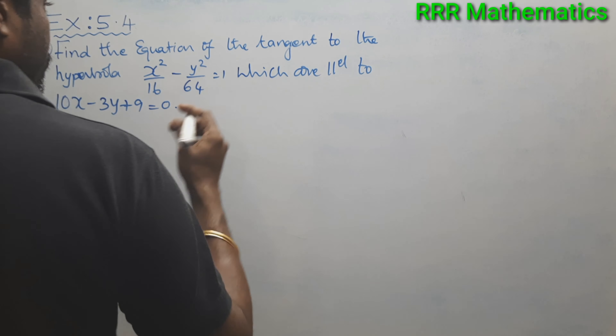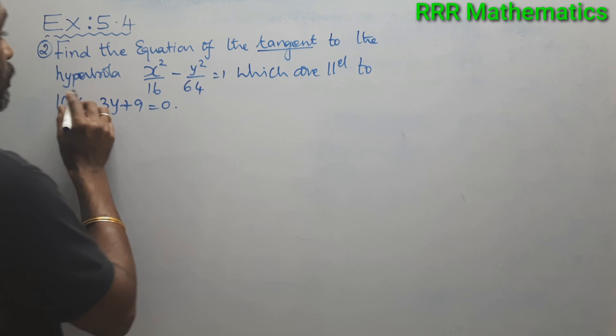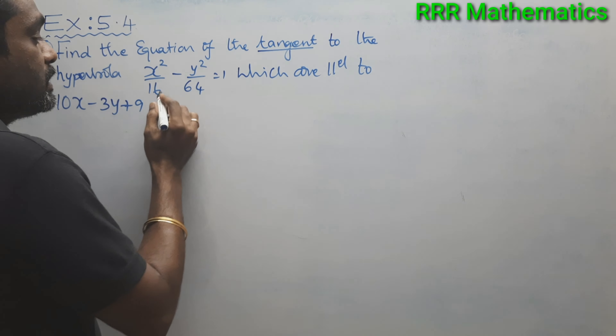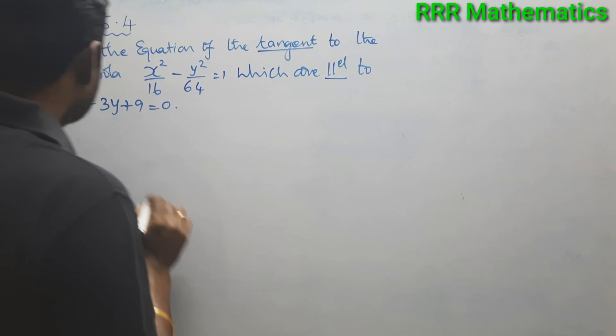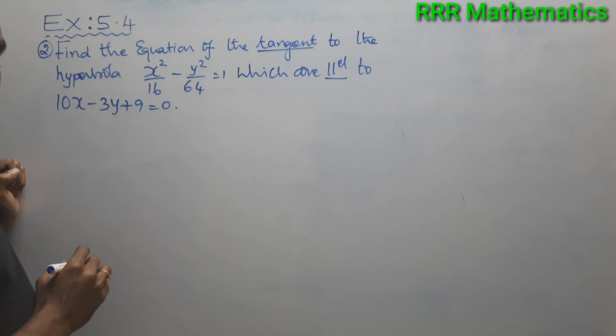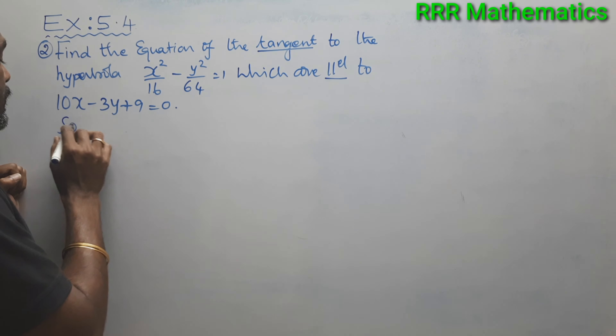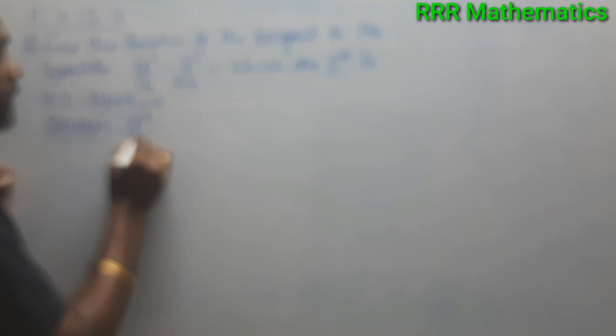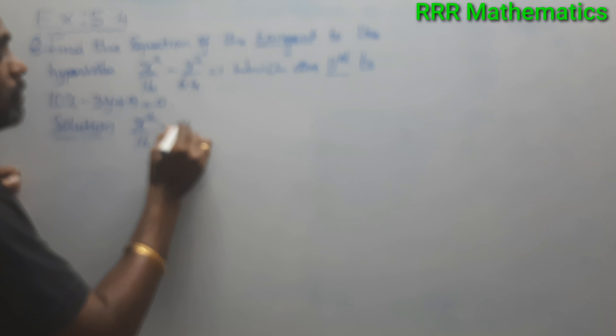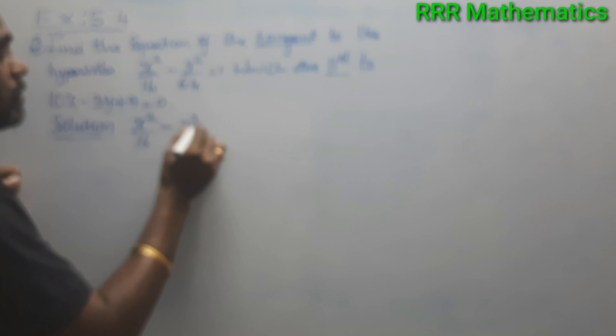We want to find out the equation of the tangent to the hyperbola x²/16 minus y²/64 = 1, which are parallel to 10x minus 3y plus 9 = 0. From the standard equation of the hyperbola x²/a² minus y²/b² = 1, we get a² = 16 and b² = 64.